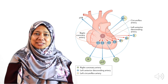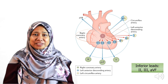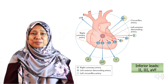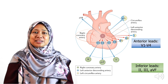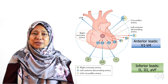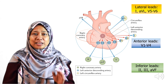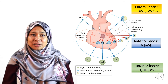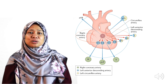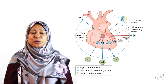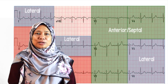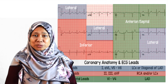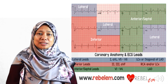Here is the summary of ECG localization and its coronary circulation. The inferior wall, shown by leads 2, 3, and AVF, is supplied mainly by the right coronary artery. The anterior wall, shown by leads V1 to V4, is supplied by the left anterior descending artery. The lateral wall, shown by leads 1, AVL, V5, and V6, is supplied mainly by the left circumflex artery. The posterolateral wall, seen by leads V7 to V9, is supplied by the right coronary artery or the left circumflex artery.